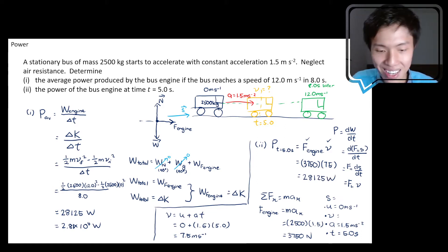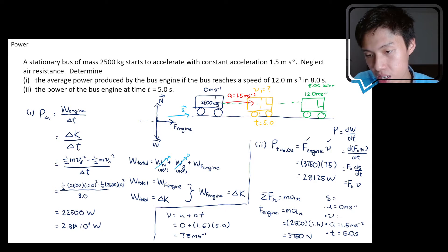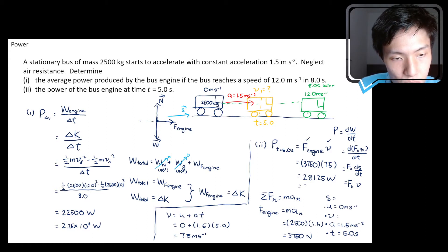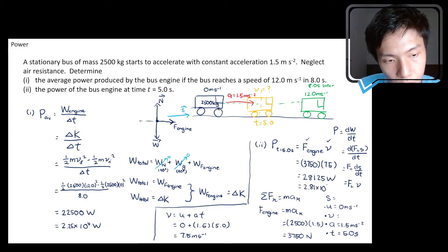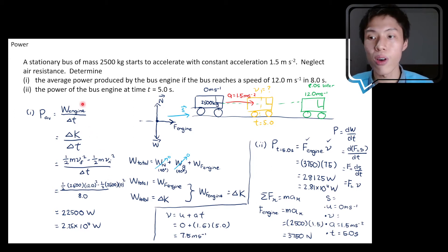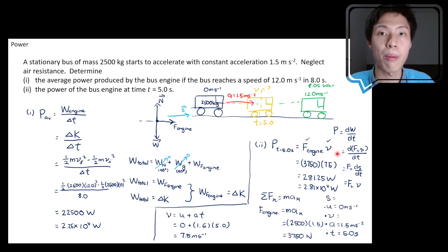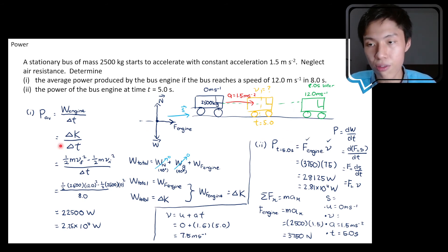Substituting into the instantaneous power formula: 3750 newtons multiplied by 7.5 meters per second gives 28,125 watts. I made a mistake in the previous question — the correct average power answer is 22,500 W, or 2.25 × 10⁴ W. The instantaneous power at t equals 5 seconds is 2.81 × 10⁴ W. For average power, divide total work by time elapsed; for instantaneous power, multiply the engine force by the velocity at that specific moment.